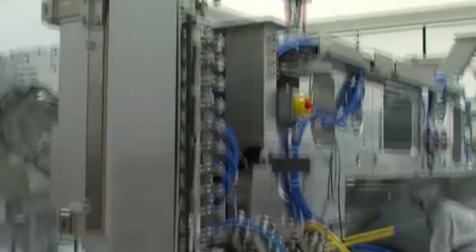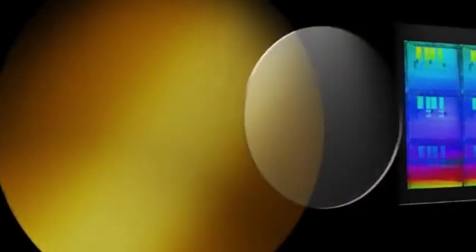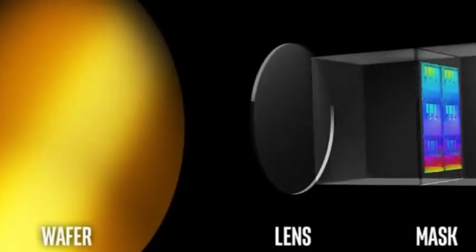In the chip manufacturing process, the photolithography process is an indispensable link. It forms circuit patterns on the silicon wafer through the principle of optical chemical reactions.